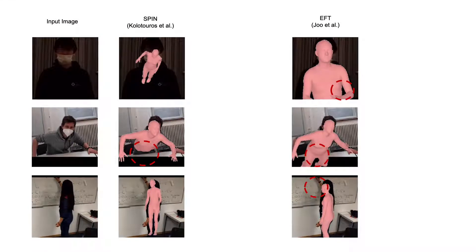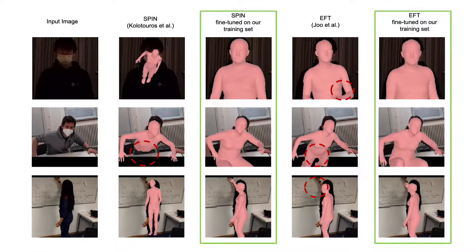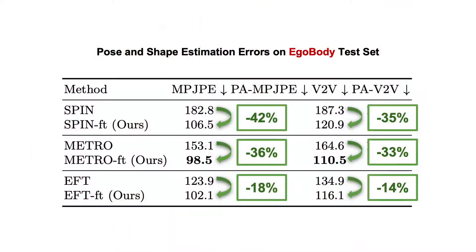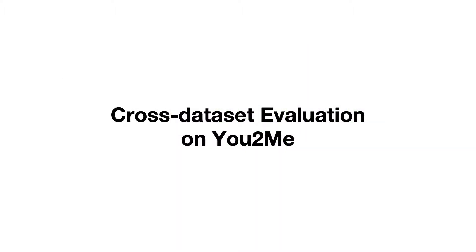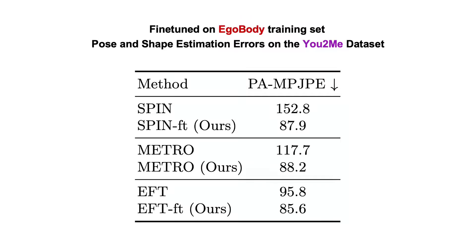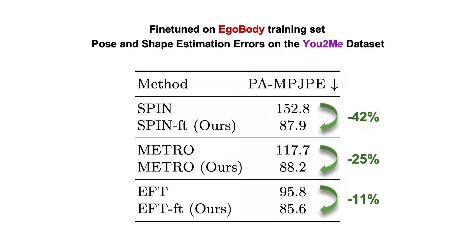Furthermore, we show that fine-tuning on our training set improves the robustness of the methods against these challenges. Quantitatively, our fine-tuned models show much higher accuracy compared to their respective original models on both pose and shape metrics. Finally, a cross-dataset evaluation validates that our training set also helps improve the model's performance on other egocentric data. After fine-tuning three recent methods — SPIN, METRO, and EFT — on our training set, their pose estimation accuracy on the U2Me dataset is also significantly improved.